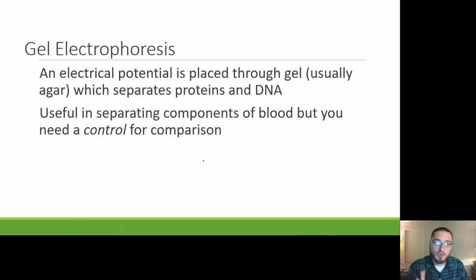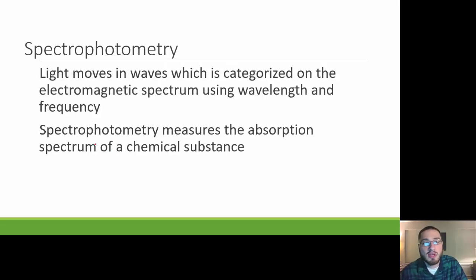Gel electrophoresis, which we'll talk about more when we get into talking about DNA. This is actually used to separate DNA. DNA is an organic molecule, a nucleic acid, and we're going to be able to separate this using this electrical potential through a gel. It's going to separate this DNA into different parts. Useful in separating components of blood, but you need a control for comparison as well. With both the thin layer chromatography, the TLC, and the gel electrophoresis, if you want to do these tests, you need a control for comparison.